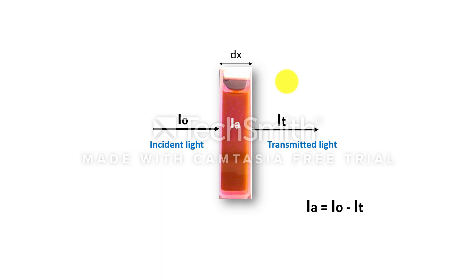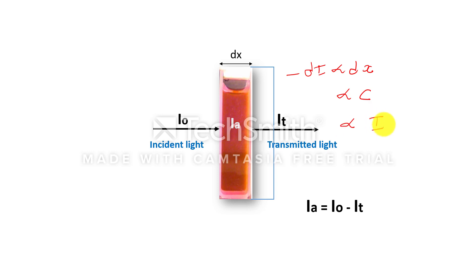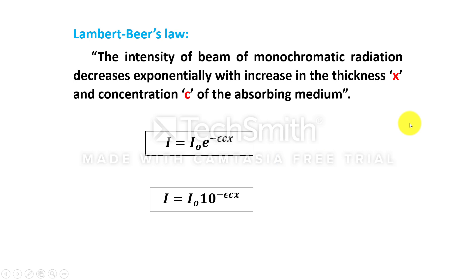The intensity of absorbed light will be the difference of intensity of incident light and the transmitted light. If we increase the thickness of the absorbing medium, more amount of light will be absorbed and the intensity of transmitted light will decrease further. Also, if we increase the concentration of the absorbing medium, again the intensity of transmitted light will decrease. So, the decrease in intensity is proportional to thickness of the medium, concentration of the absorbing medium, and the intensity of incident light.